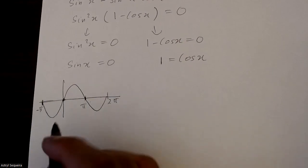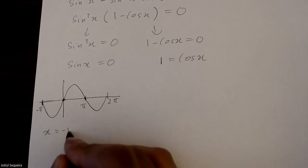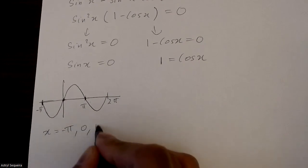So I have 1, 2, 3 points: x equals negative pi, 0, and pi.